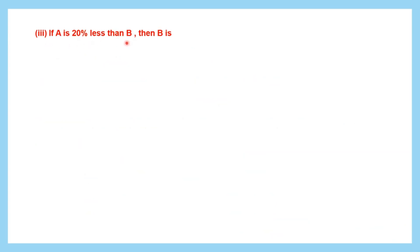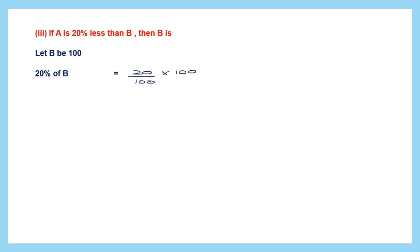Question 3. If A is 20% less than B, then B is what percentage more than A? Let's consider B to be 100. Since A is 20% less than B, we calculate 20% of B: 20 by 100 into 100 gives us 20. So 20% of B is 20. We need to find both A and B to use the percentage formula.